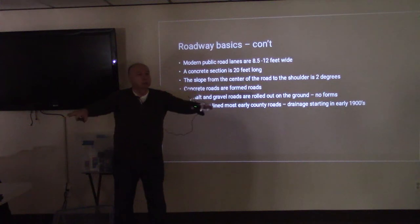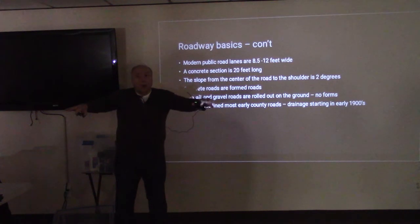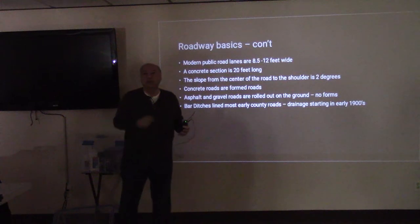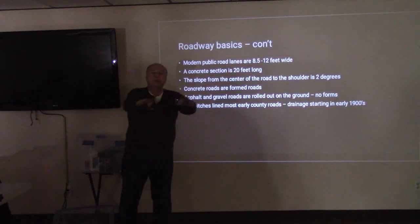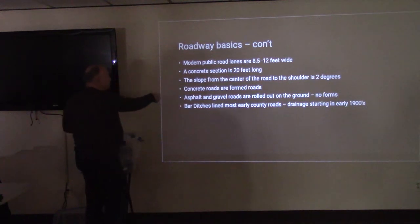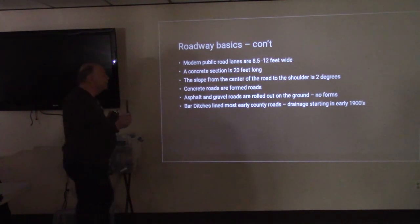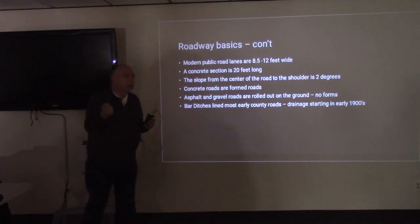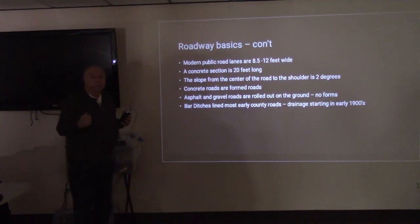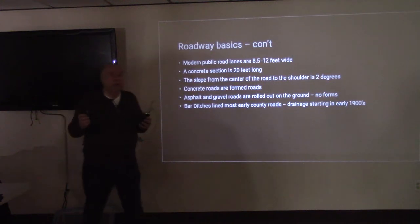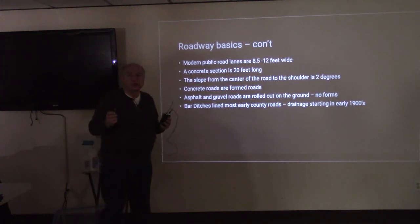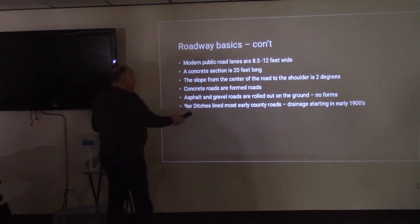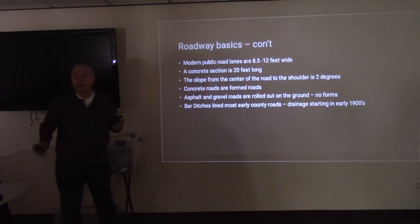You'll also notice that roads — including asphalt roads — slope from the middle of the road down. Why? Rain. They want the road to be self-clearing. Concrete roads are formed; wherever concrete is put down, it's put down in a form. It has to cover up the rebar that keeps it together, providing strength and flexibility. Asphalt, gravel, and dirt roads have no form — it's literally poured out on the ground.